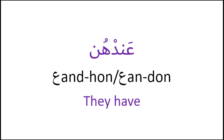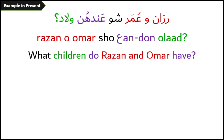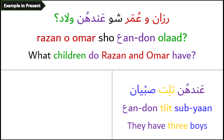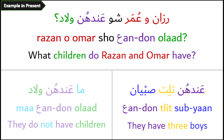عندهن – they have. Example: Rezan, Umar – شو عندن ولاد؟ – What children do Rezan and Umar have? The reply is: عندن تلت صبيان – They have three boys. Or to negate: ما عندن ولاد – They do not have children.